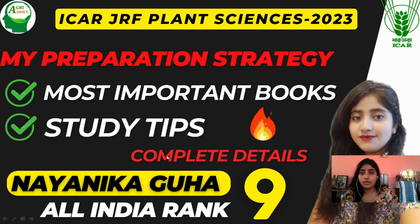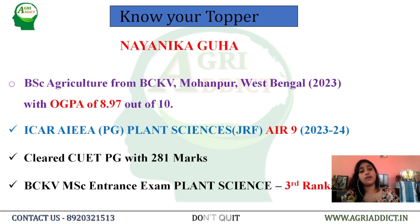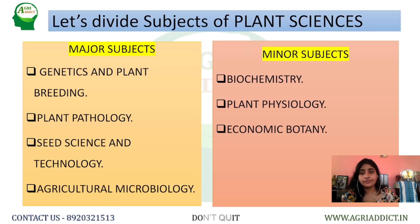Hello everyone. I am Nayanika Vuvul and I have secured All India Rank 9 in this year's ICAR AIEEA PG JRF examination in the plant sciences module. I have completed my BSc in Agriculture degree from Vidhan Chandra Krishi Vishwavidyalaya, West Bengal, with an overall CGPA of 8.97 out of 10. I have also cleared CVTPG with 281 marks and secured 3rd rank in BCKV MSc entrance in plant sciences module. Now let us divide the plant science subject into major and minor groups.